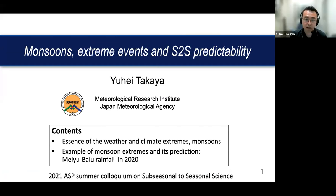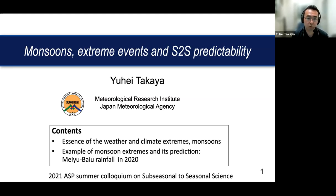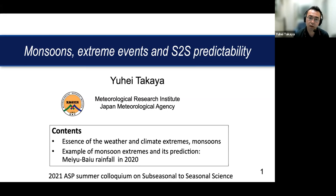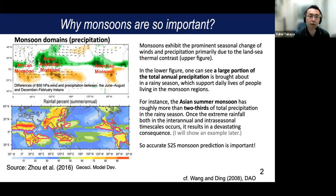Thanks to the organizers, in particular Anish and Judith, for making this happen. I'm Yuhei Takaya with the Meteorological Research Institute of Japan Meteorological Agency. This talk covers two important S2S-related topics: monsoons and extreme events, and S2S predictability. I'll cover the essence of weather and climate extremes, including statistical and dynamic aspects of extremes and the monsoon.